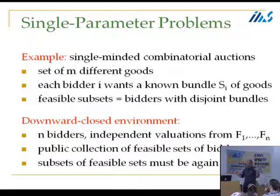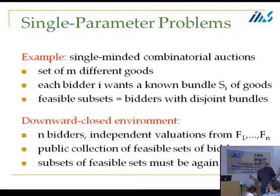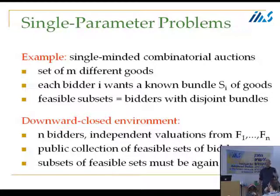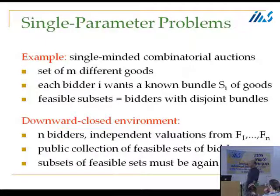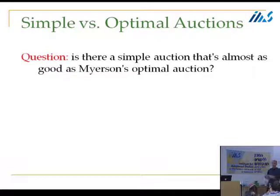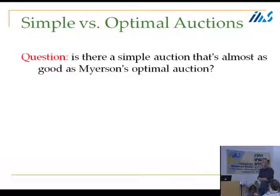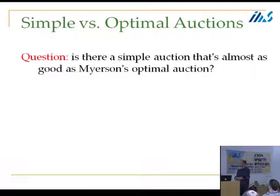Let me jump into the first set of results with Jason Hartline. These are about single parameter problems — strictly speaking, downward-closed environments. Just think about combinatorial auctions with single-minded bidders. Bidder number one only wants goods one, three, and five — if it doesn't get all three it has no value; bidder two wants goods three, seven, and ten; bidder three wants goods 17 and 22, and so on. These desired bundles are known; what you don't know is each bidder's private valuation.